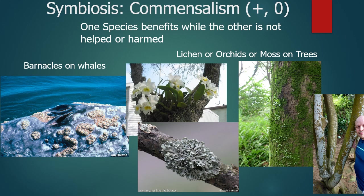The second type of symbiosis is commensalism — represented by a plus and a zero. One species benefits while the other is not helped but also not harmed. Barnacles on a whale are a good example: barnacles get shelter from living on the largest animal in the world, but they don't help or harm the whale. You also see this in the plant kingdom where lichen or orchids live on larger trees — they're not helping or harming the trees, just using them as a place to live and grow.